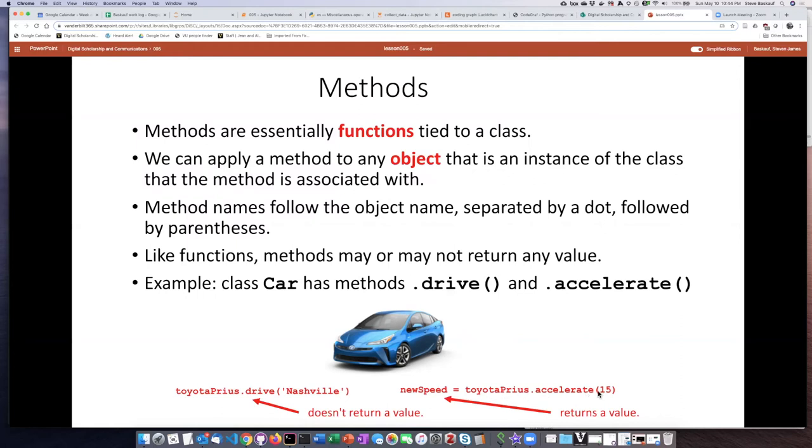Now methods are just like functions. A function can return a value or a function cannot return a value and simply do something. So in the example of this first method, the drive method, it actually does something to the car. It makes the car go somewhere but it doesn't return anything. Whereas in the accelerate example, perhaps the return value would be the new speed that you get after you accelerate by 15 miles per hour. So this is kind of a fanciful example, not really a code example, but we'll next take a look at a code example of a method.